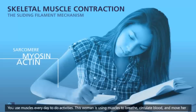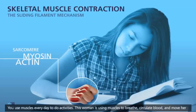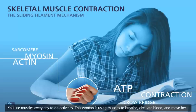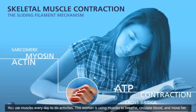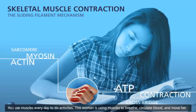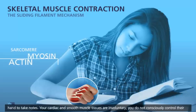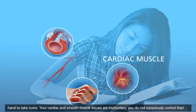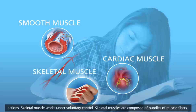You use muscles every day to do activities. This woman is using muscles to breathe, circulate blood, and move her hand to take notes. Your cardiac and smooth muscle tissues are involuntary — you do not consciously control their actions. Skeletal muscle works under voluntary control.